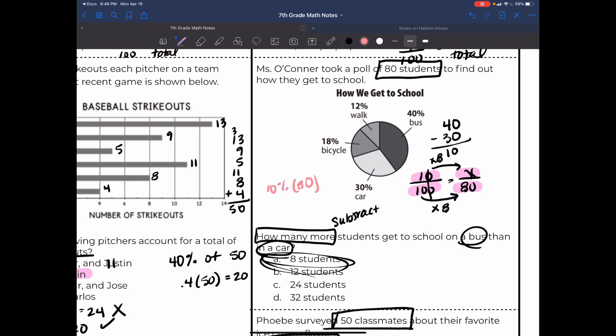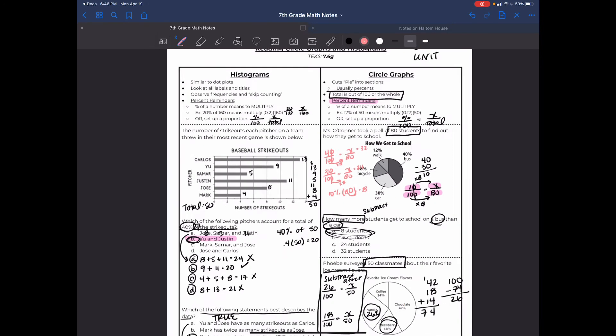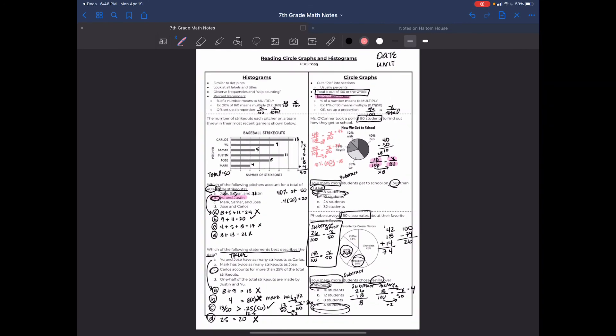Or you could have found 40 percent of 80 and 30 percent of 80, which also would have been really easy because you just multiply by 8 for both of them: 32 and 24. And then when you subtract 32 and 24, you still get 8 as your answer. So 8 would have been your answer either strategy you chose. There you have it, folks!